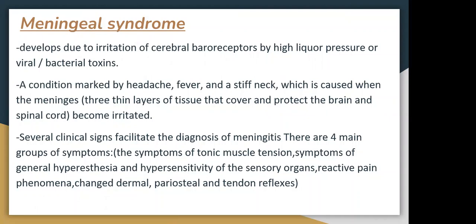The condition is marked by headache, fever, and stiff neck. The three layers of tissues that cover and protect the brain and spinal cord become irritated. The three main layers are: the first layer, the dura mater; the second, the arachnoid; and the third, the pia mater — all three layers can become infected or irritated.